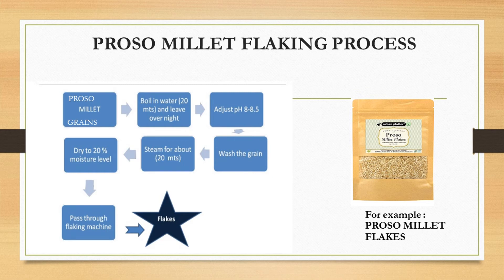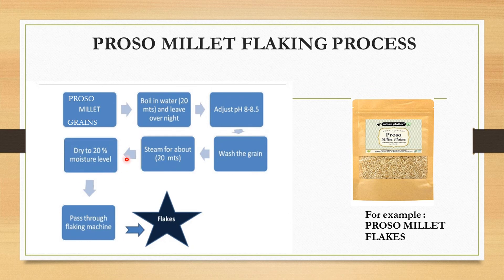Let's go further to the ProSomulets flaking process. We have the ProSomulet grains, which are boiled in water for 20 minutes and left overnight. Boiling softens the grains. Then we adjust the pH to 8.5, wash the grains, steam for 20 minutes, and dry to 20% moisture level to remove excess moisture. Then we pass it through a flaking machine and obtain flakes. This is an example of ProSomulet flakes.